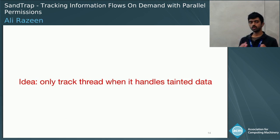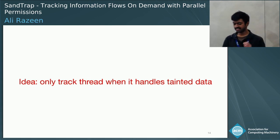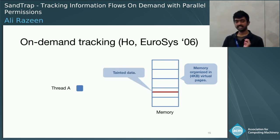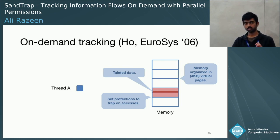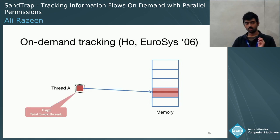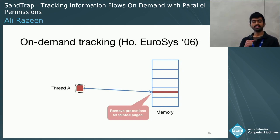One way to do better is to observe that we don't have to do native code taint tracking all the time — we only need to do it when the app handles tainted data. We did not come up with this idea; it was developed in earlier work. Let's see how it functions in a system where there's only a single thread running at a time. On the left you have a single thread; on the right, memory organized in four-kilobyte virtual pages, including a page with tainted data. The system applies page protections on that page to prevent reads and writes. The thread runs at full speed; the moment it tries to access tainted data, it will trap, and an emulator will begin to both run the thread and perform the appropriate taint tracking. Before the emulator begins, the system removes the protections from the tainted page so that the emulator itself may access the tainted data.